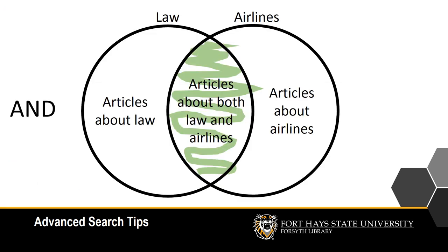When you use AND to connect your search keywords, the database or catalog will only provide results that include both of your keywords. AND allows you to target the overlap of two topics, helping you narrow down your search to the most relevant results.